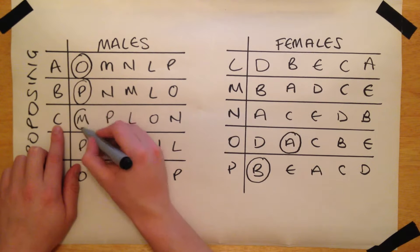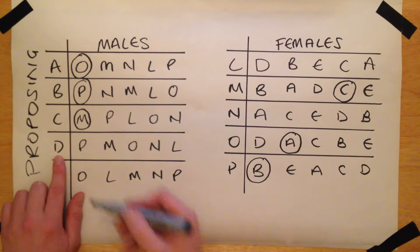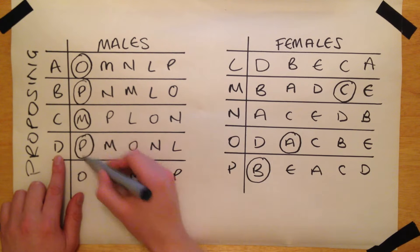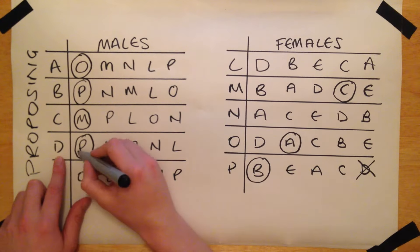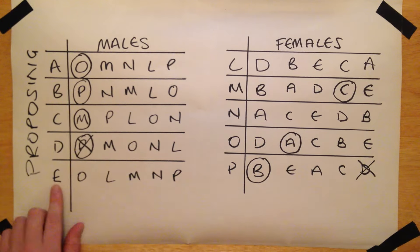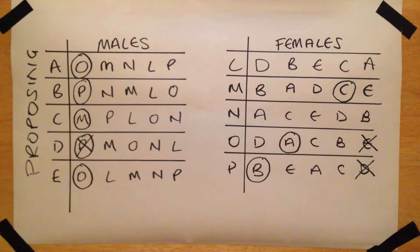C proposes to M, and she also accepts, due to lack of any other offer. D then proposes to P, however, P has already received a better offer from B, and so she rejects D. Finally, E proposes to O, but as O has already received a better offer from A, she turns him down.